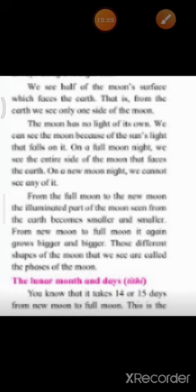From full moon to new moon, the illuminated part of the moon seen from the earth becomes smaller and smaller. From new moon to full moon, it again grows bigger and bigger. These different shapes of the moon that we see are called the phases of the moon. From a full moon day to a new moon day, the shape of the moon goes on decreasing, while from new moon to full moon day, the shape goes on increasing.